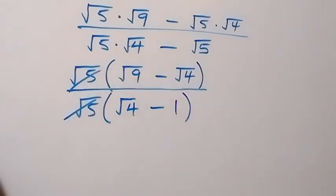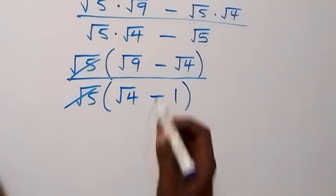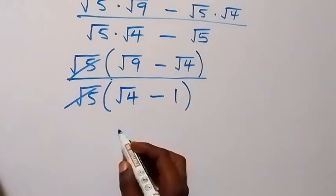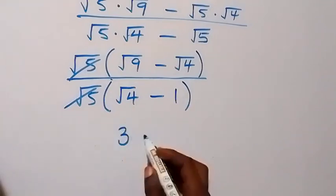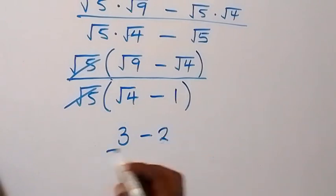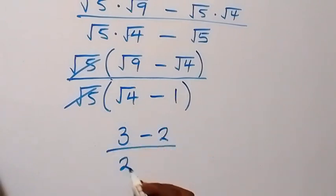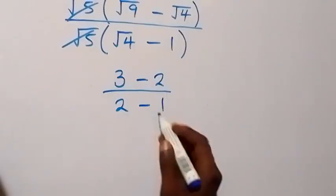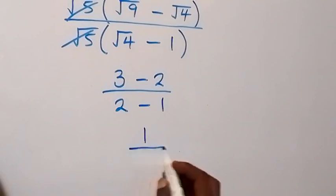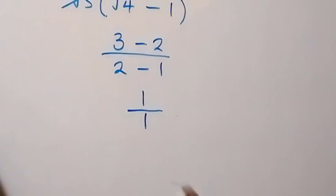What we have left is root 9, which is 3, minus root 4, which is 2, over root 4, which is 2, minus 1. So that gives us 3 minus 2 over 2 minus 1, which is 1 over 1. Therefore the result is simply 1.